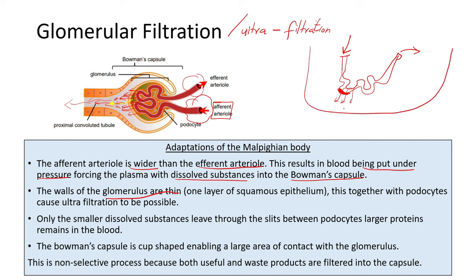Because the walls of the glomerulus are thin, it makes it easy for the smaller dissolved waste products to leave the blood in the glomerulus and move into the Bowman's capsule. This is an adaptation as well. The walls of the glomerulus are thin — only one layer of squamous epithelium. This outer layer of the glomerulus is known as the squamous epithelium.